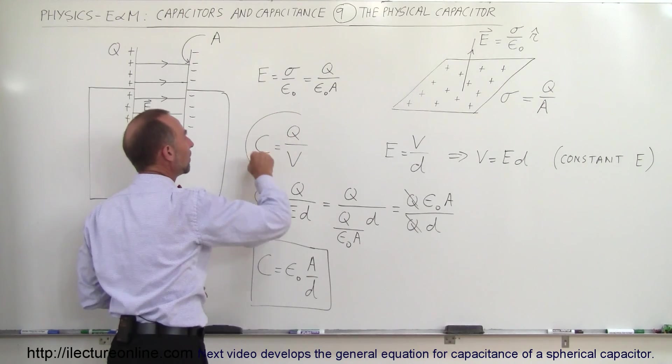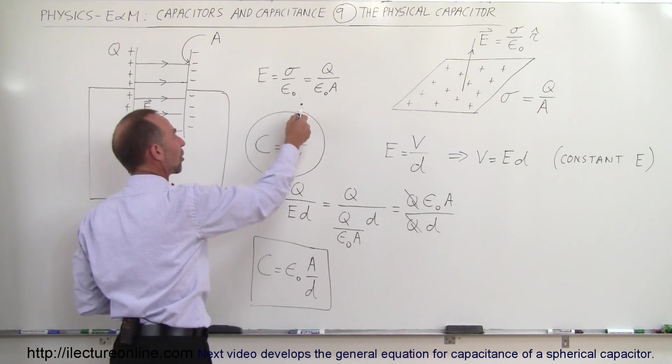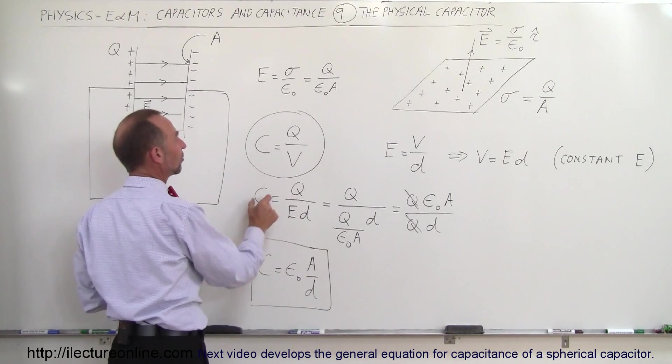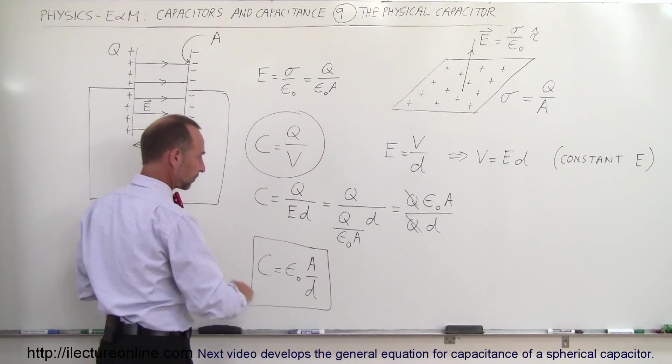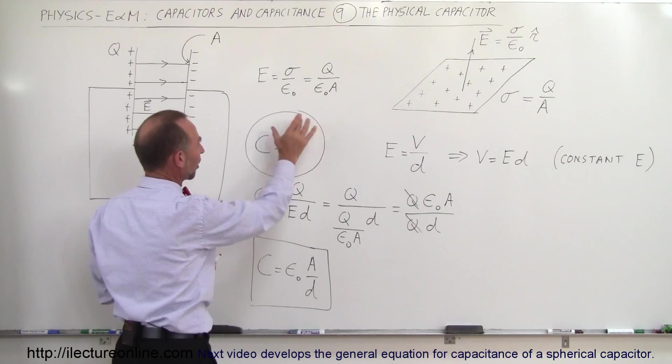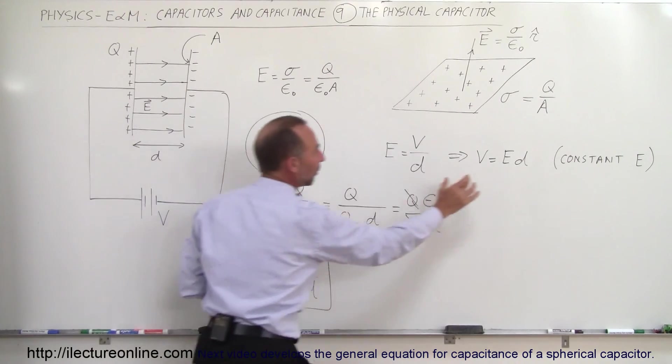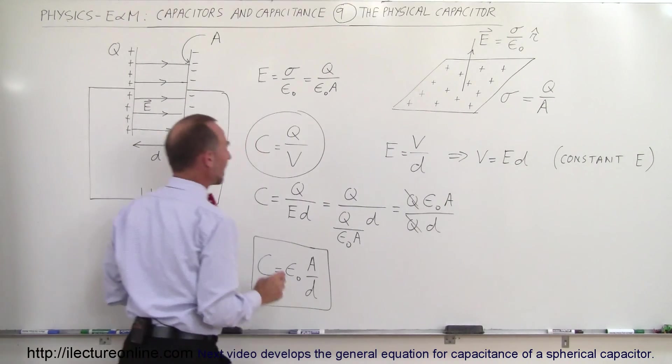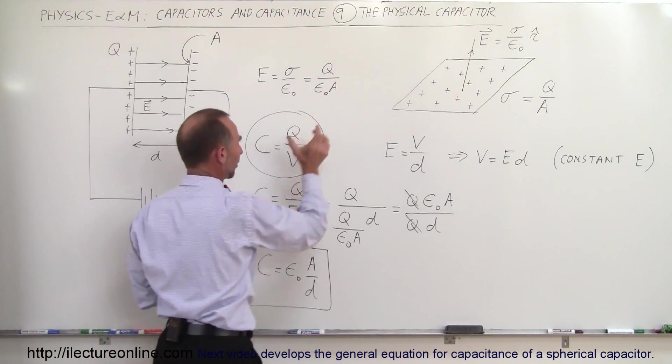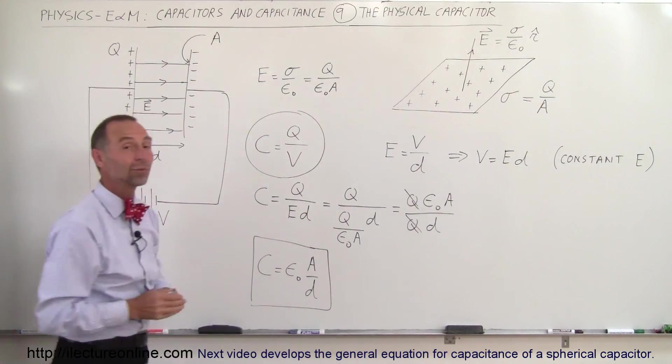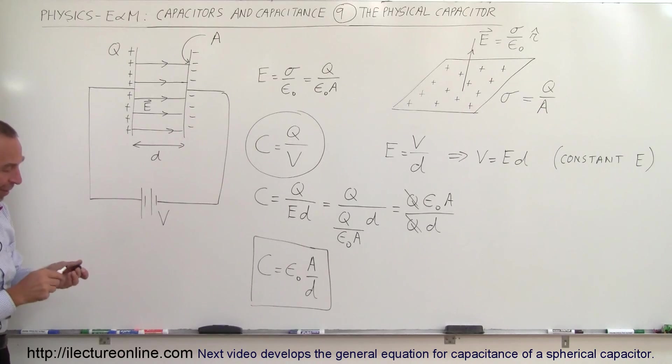We have the definition of the capacitance, which is simply the ratio of charge divided by voltage. We replace the voltage by what it is in terms of E and D, and then we replace E in terms of what the electric field is between the plates, and out pops the capacitance of a parallel plate capacitor. And that's how we do that.